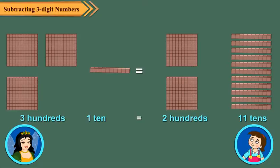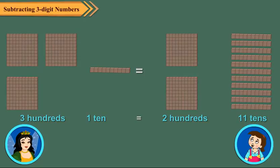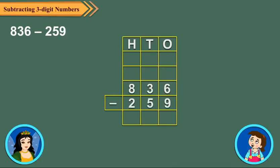Now let us know how to subtract 3-Digit Numbers with regrouping. Okay Neha, let us find 836 minus 259. Arrange the numbers in columns. Now subtract the ones digits. Since 6 is less than 9, so we regroup 3 tens, 6 ones as 2 tens and 16 ones.